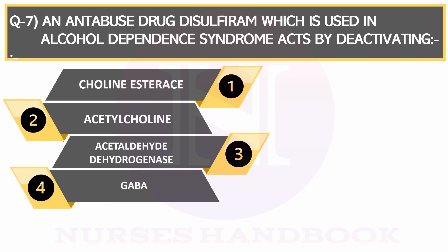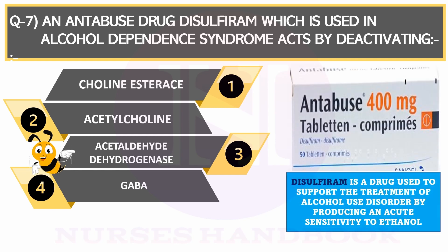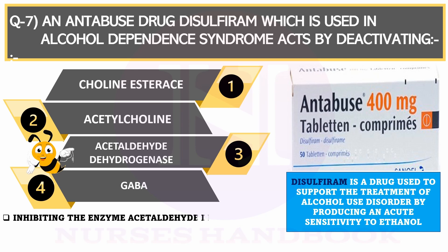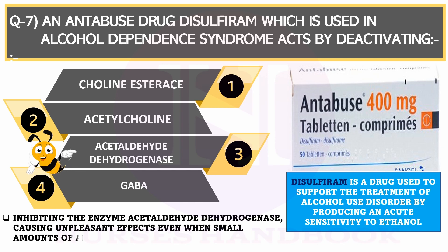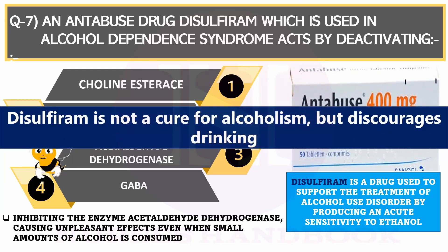The correct answer is acetaldehyde dehydrogenase. Disulfiram is a drug used to support the treatment of alcohol-use disorder by producing an acute sensitivity to ethanol. It mainly inhibits the enzyme acetaldehyde dehydrogenase and induces unpleasant effects even when a small amount of alcohol is consumed.